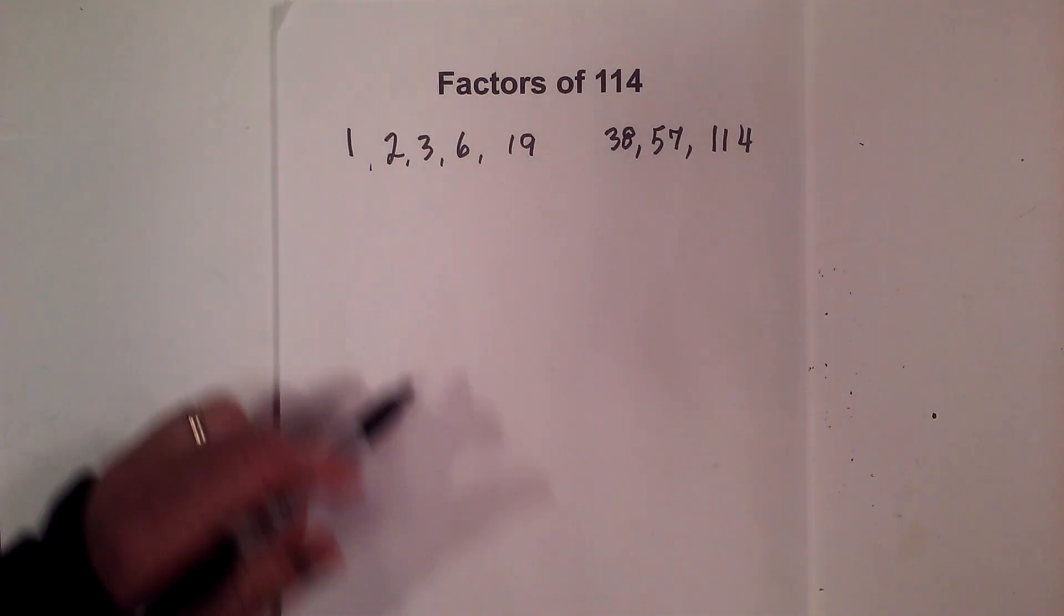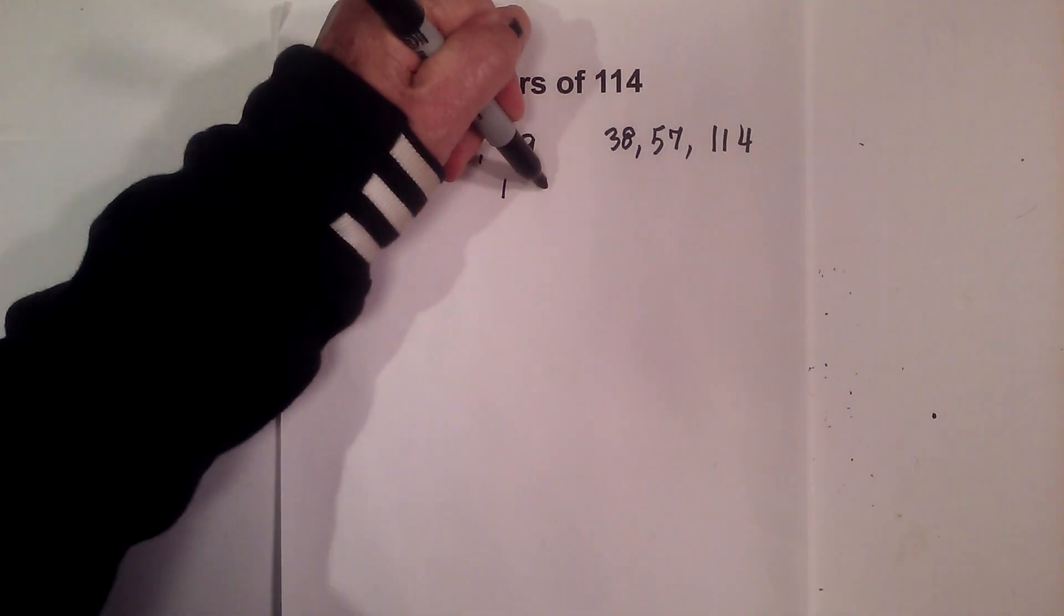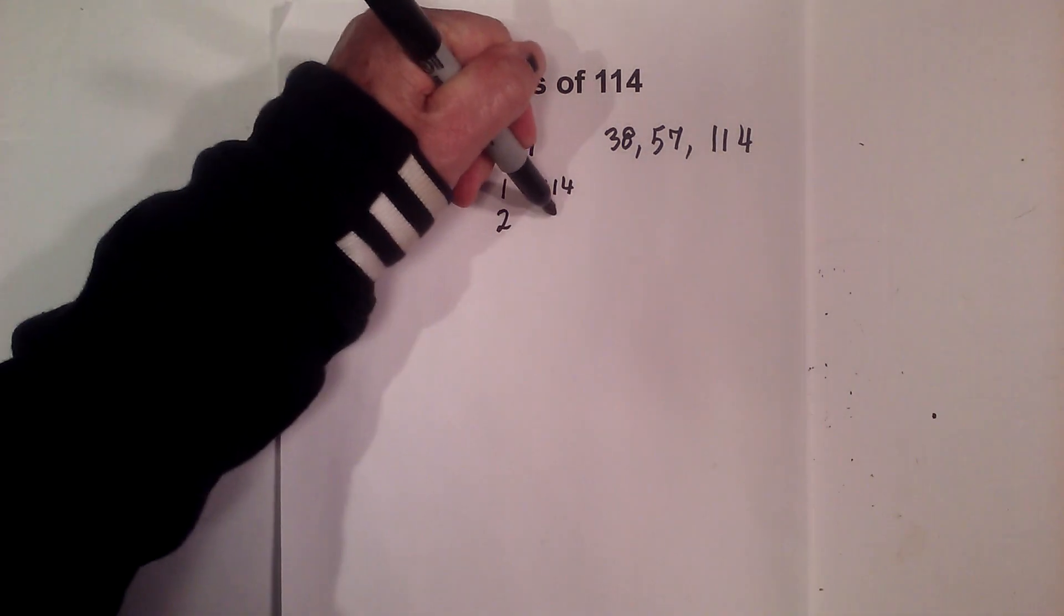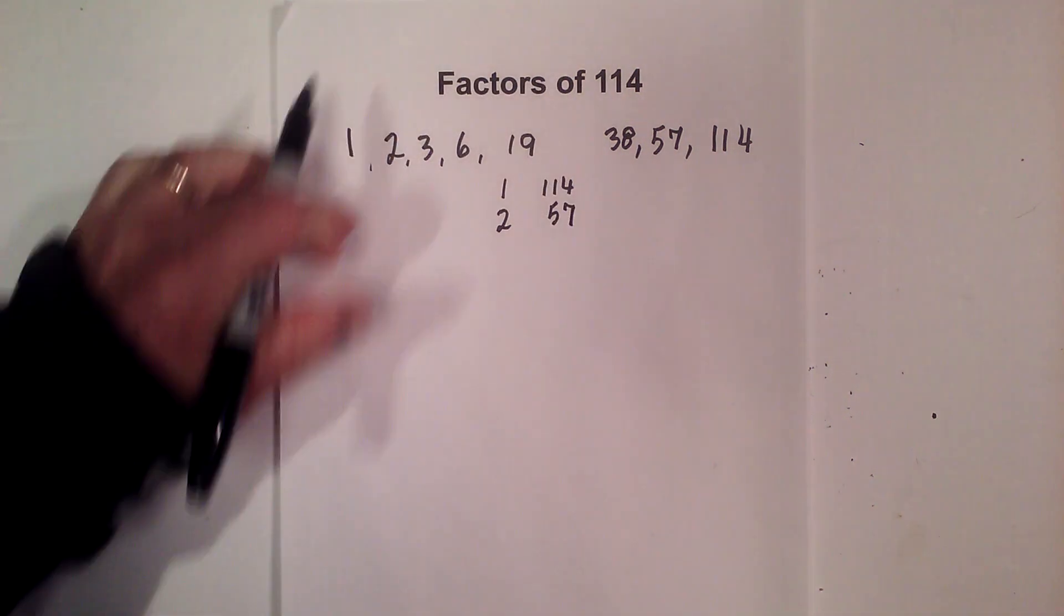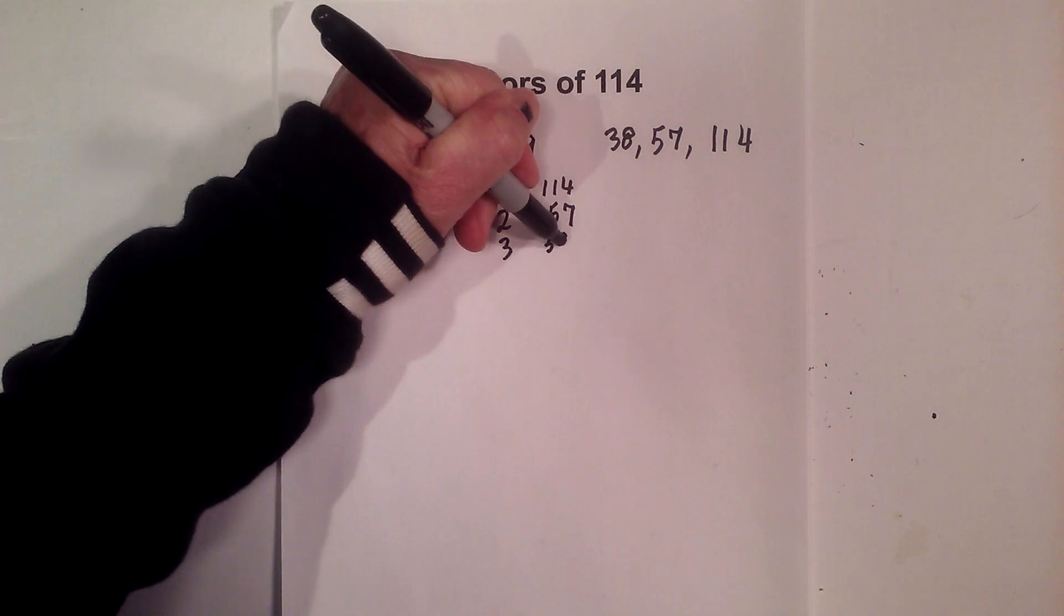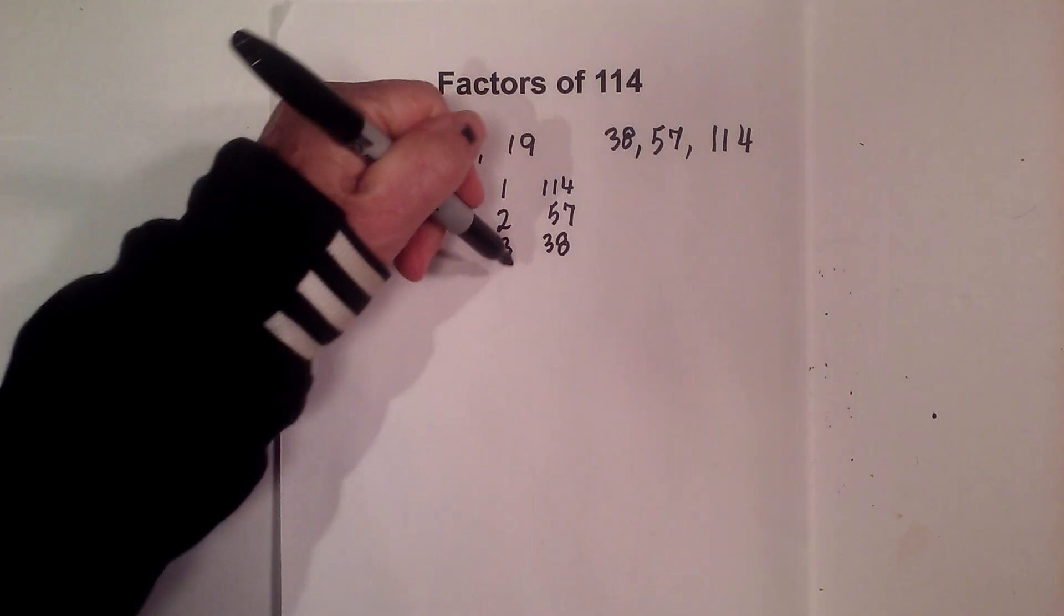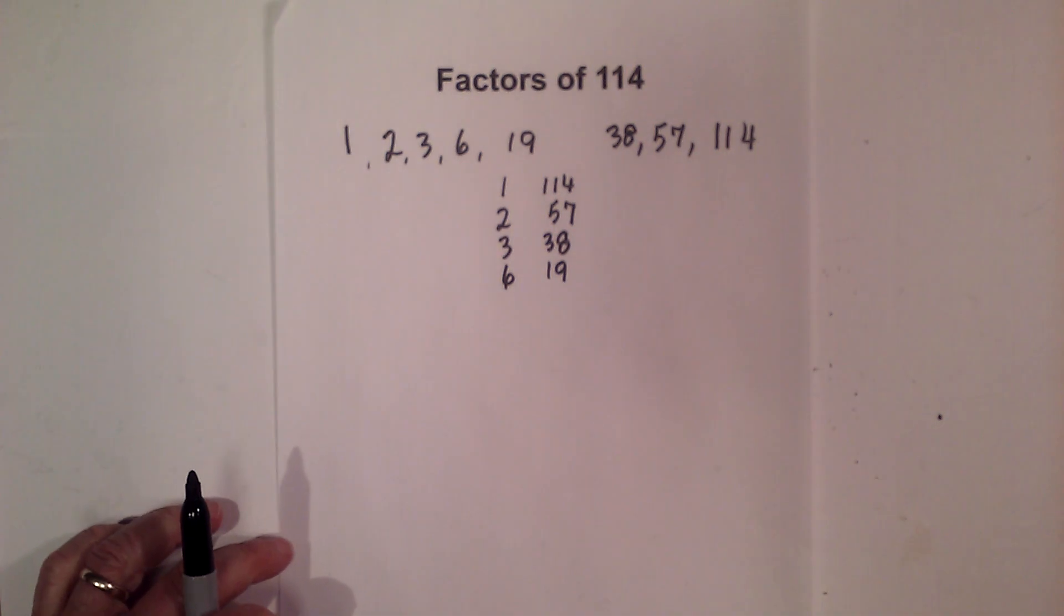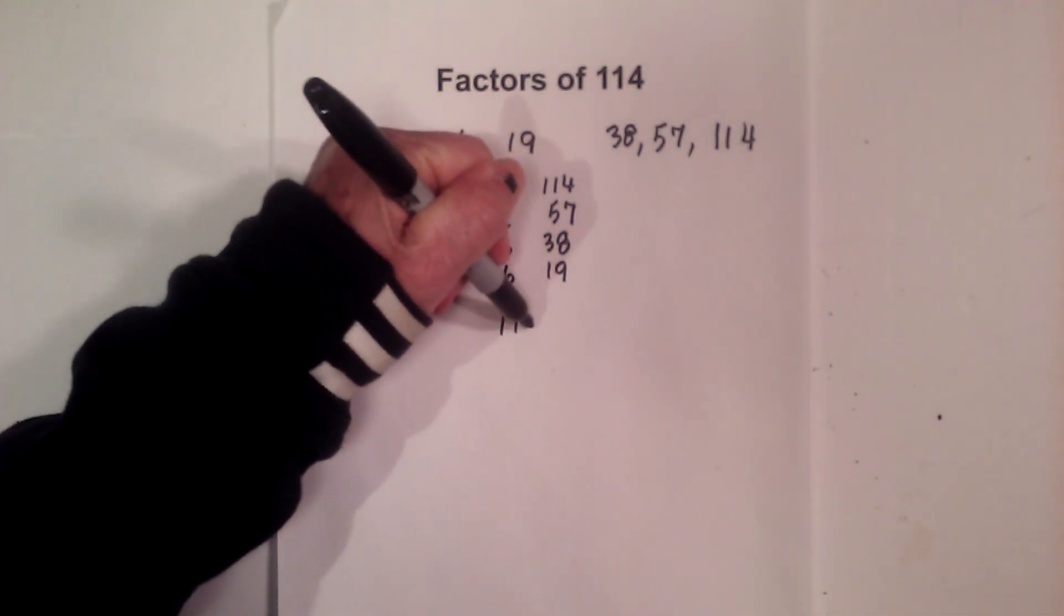If you'd like them in pairs: 1 times 114, 2 times 57, 3 times 38, 6 times 19. Now let's find the prime factors of 114. I like to use a factor tree.